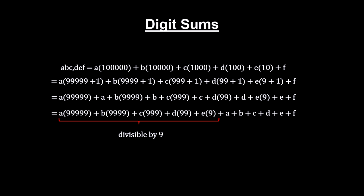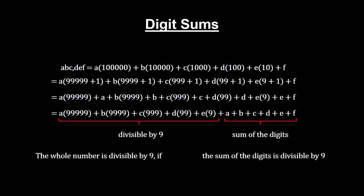Every number in the first bracket is divisible by 9. So, if the sum of the digits in the second bracket is also divisible by 9, the whole number is divisible by 9.